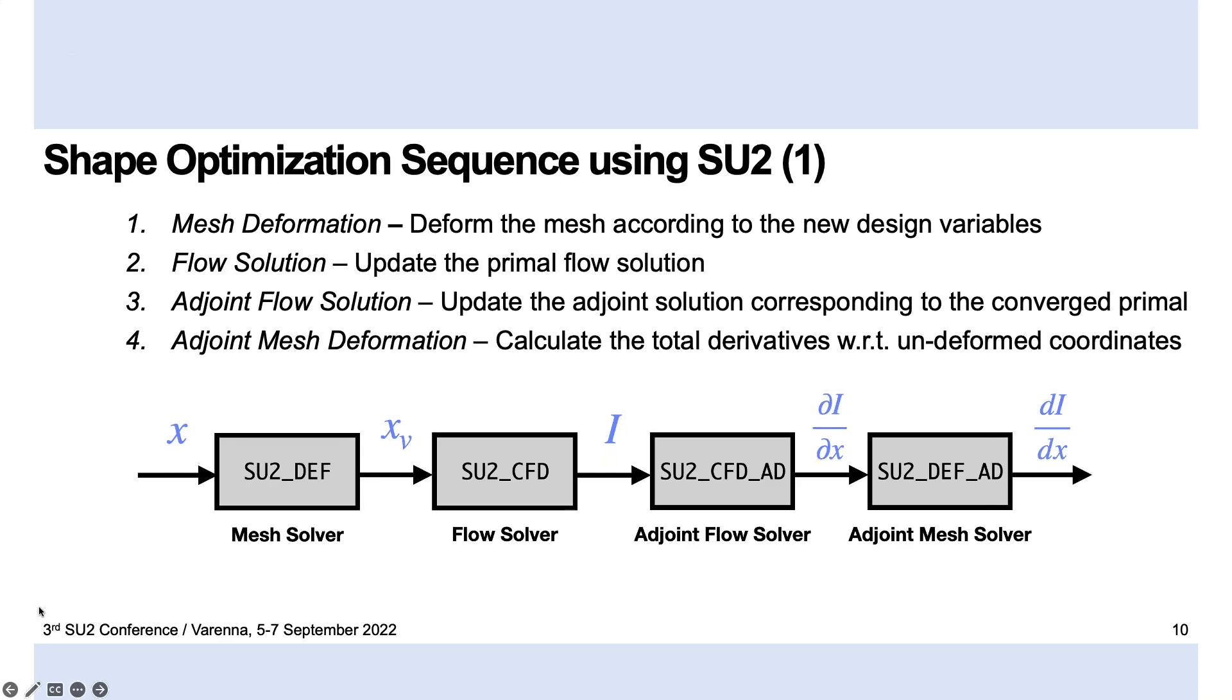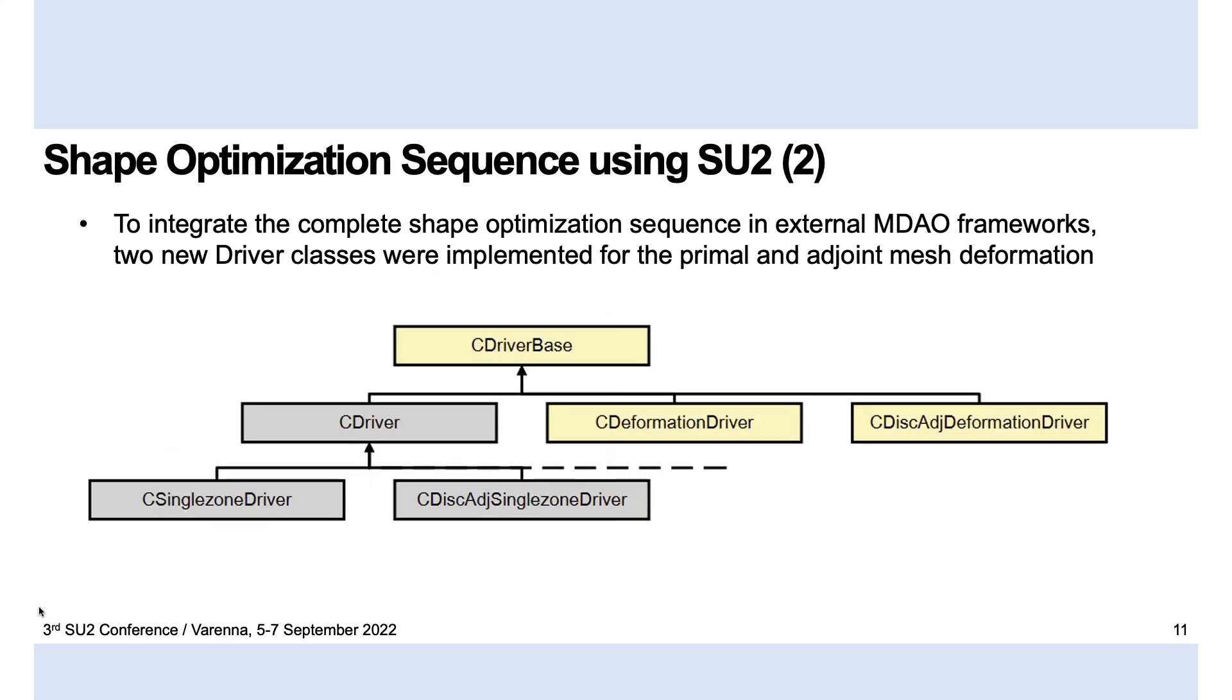Unfortunately, only two of these four components were previously directly controllable through a Python interface. And so the first part of the work that Hart and I did was to implement two new so-called driver classes for the mesh deformation as well as its adjoint counterpart. And in order to avoid code duplication, we ended up also adding an extra parent class to factor out the common code.